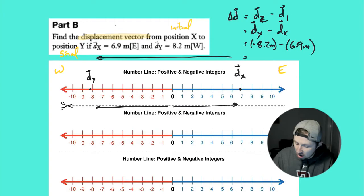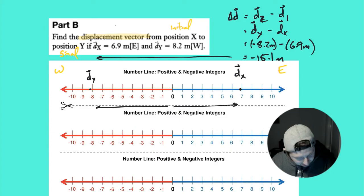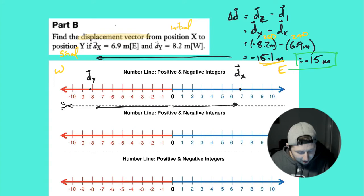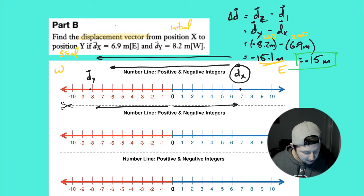Plugging in values: DY is negative 8.2 meters because we went to the left in a negative direction, minus positive 6.9 meters because that was in the positive eastward direction. On the calculator: negative 8.2 minus positive 6.9 gives us negative 15.1 meters. Checking significant digits: both values have two significant digits, so the final answer rounds to negative 15 meters. That makes sense — we went from position X heading in a negative direction, ending up at negative 15 meters.